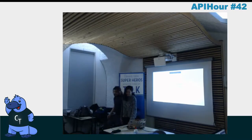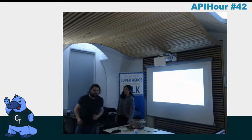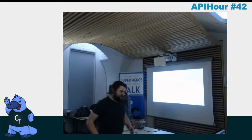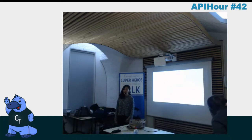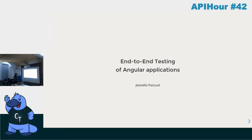Hi everyone, I'm Janela Pascual. I'm a front-end developer at PerfectMemory, and one of my main responsibilities is ensuring that end users have a coherent visual experience. So how do I implement that with CSS and end-to-end tests?